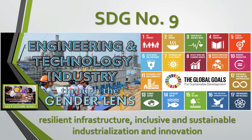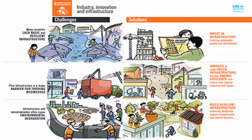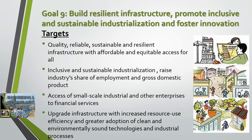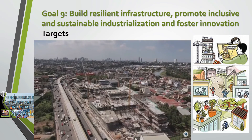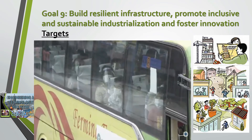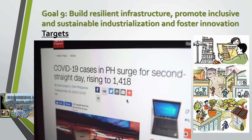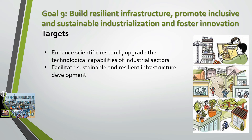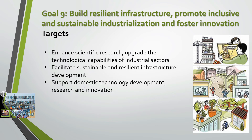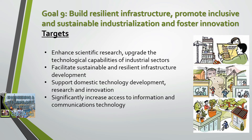SDG Number 9 is towards building resilient infrastructure, inclusive and sustainable industrialization, and innovation. Targets of this SDG include: quality, reliable, sustainable, and resilient infrastructure with affordable and equitable access for all; inclusive and sustainable industrialization to raise industry's share of employment and GDP; access for small-scale industrial enterprises to financial services; upgrade infrastructure with increased resource use efficiency and adoption of clean and environmentally sound technologies; enhance scientific research and upgrade technological capabilities of industrial sectors; facilitate sustainable and resilient infrastructure development; and significantly increase access to information and communications technology.